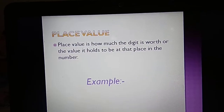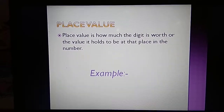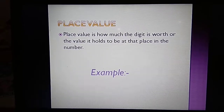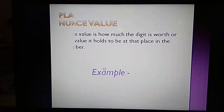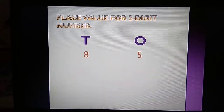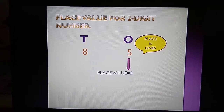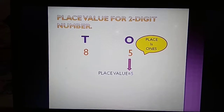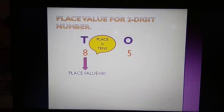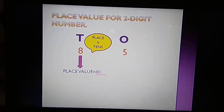Now let us understand the meaning of place value. Place value is how much the digit is worth, or the value it holds at its place in the number. Let us take some examples. Here we have 2 digits, 8 and 5. The place of 5 is 1s, thus its place value is 5. The place of 8 is 10s, thus its place value is 80.